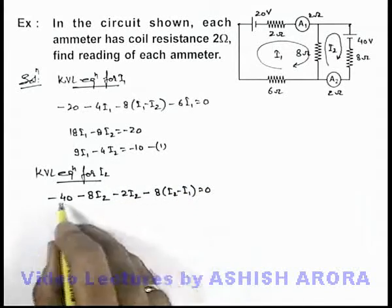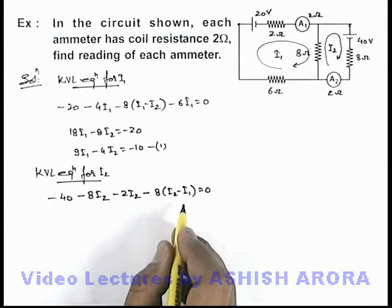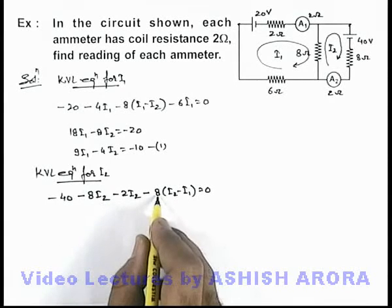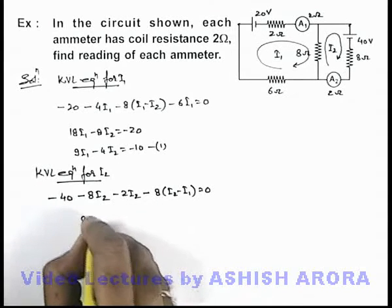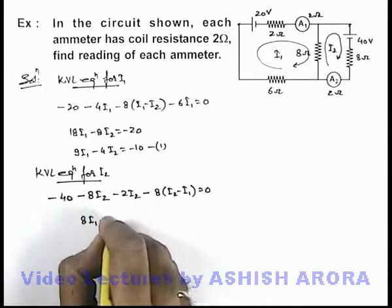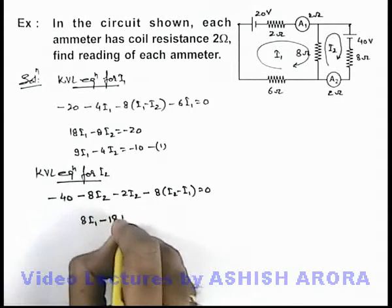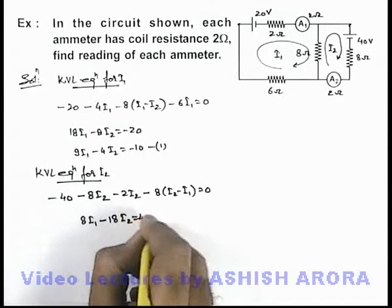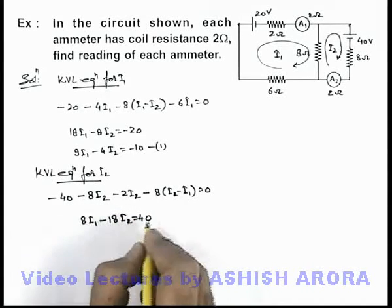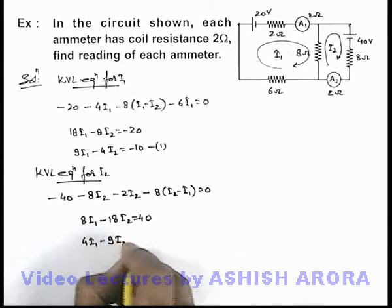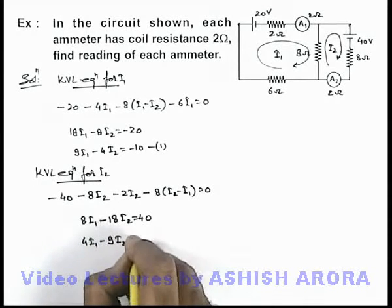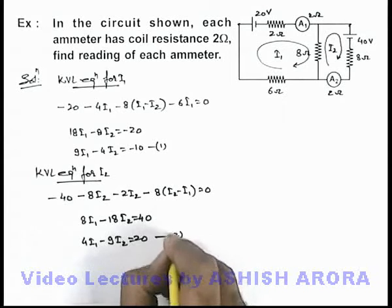And if we just simplify this expression, the result we are getting is: 8i1 minus 8i2 minus 8i2 equal to 40. And if we divide the whole equation by 2, this will give us 4i1 minus 9i2 equal to 20. That is our equation number 2.